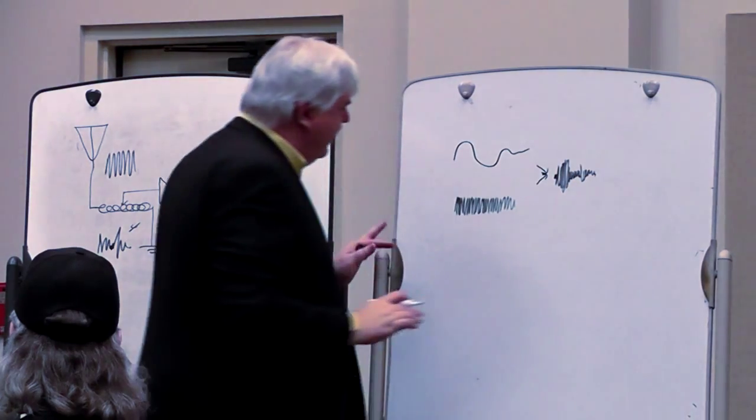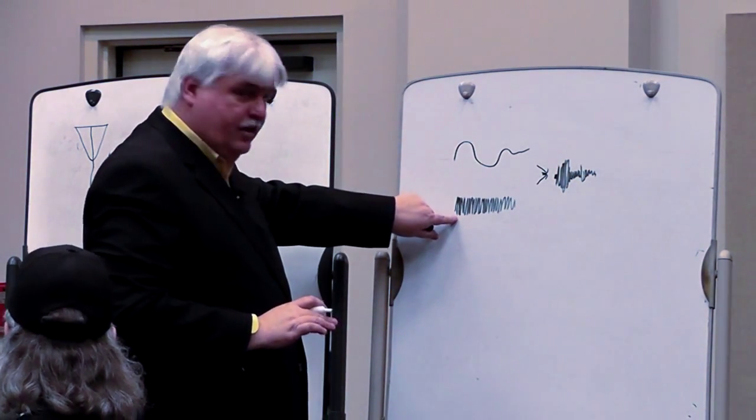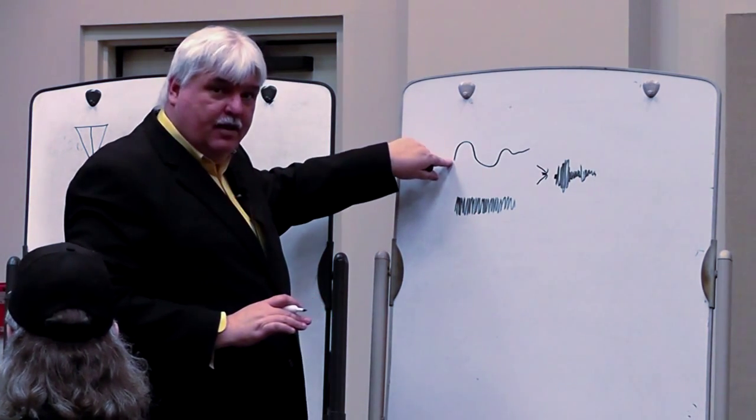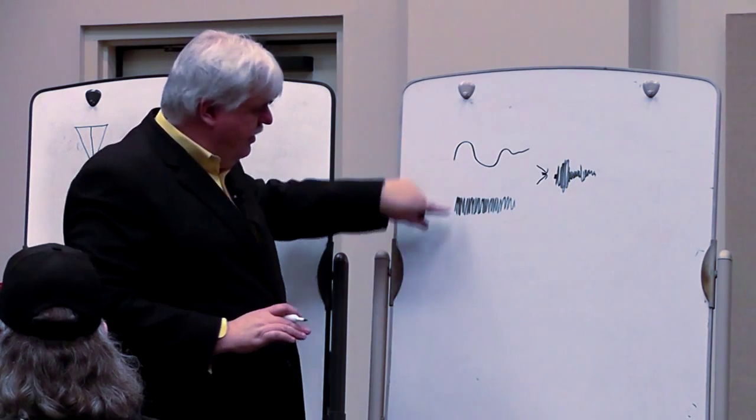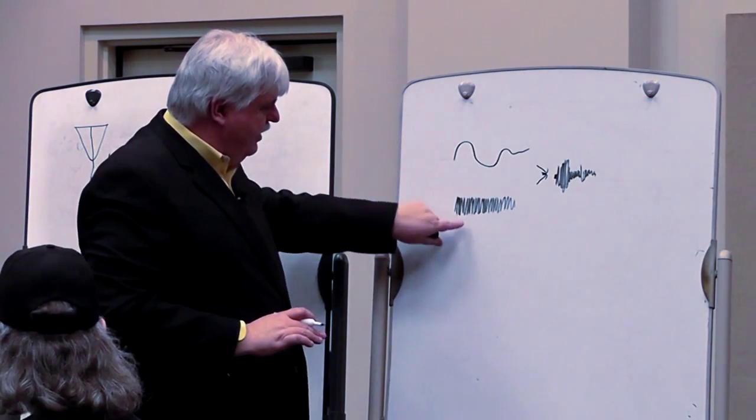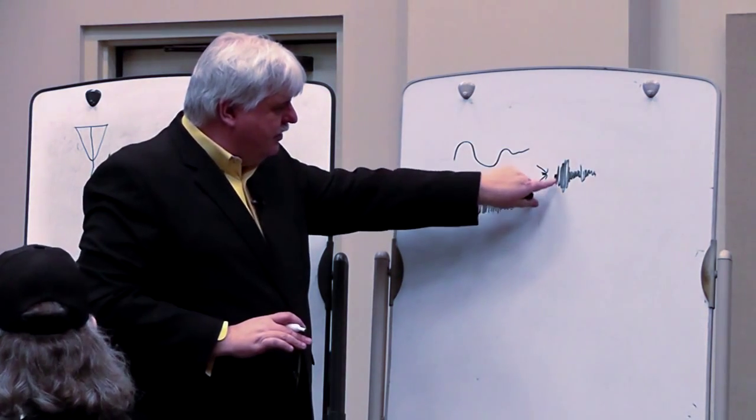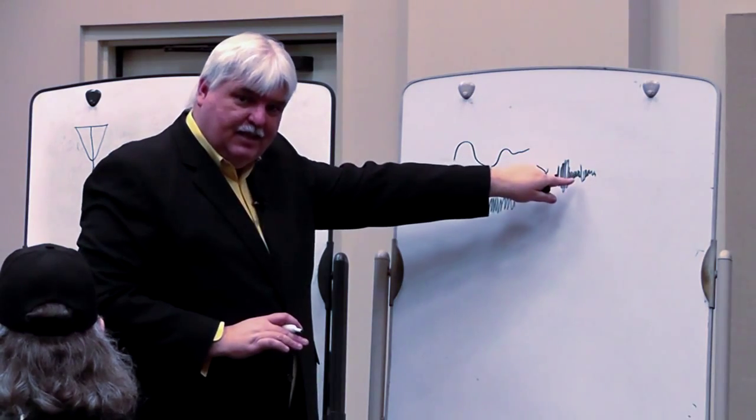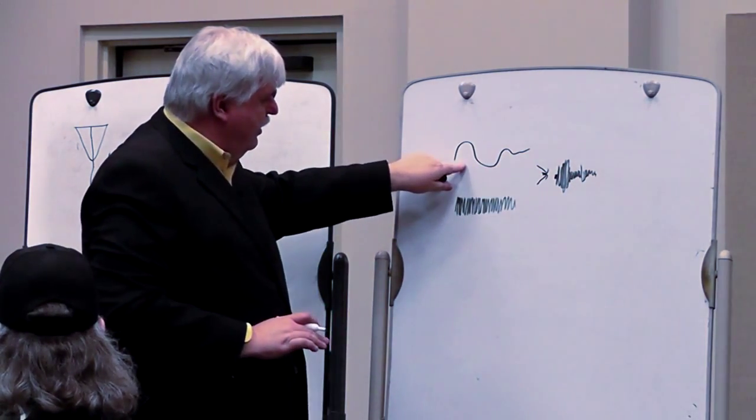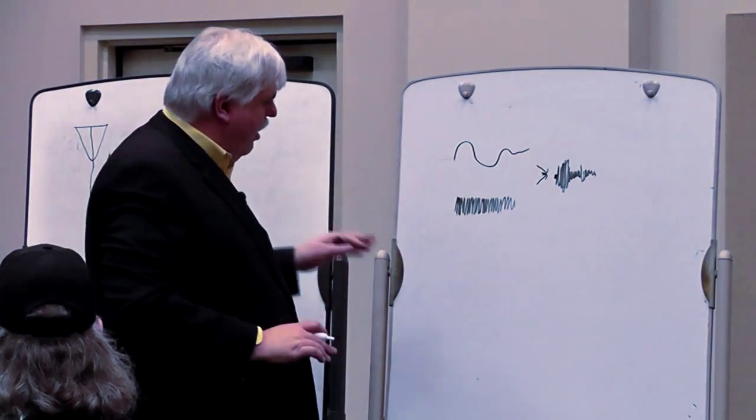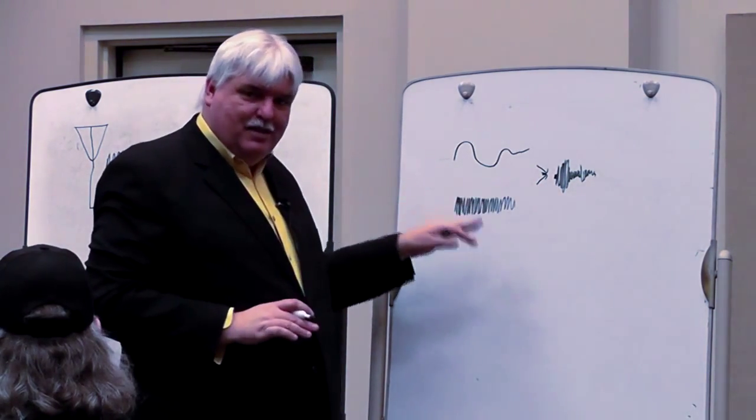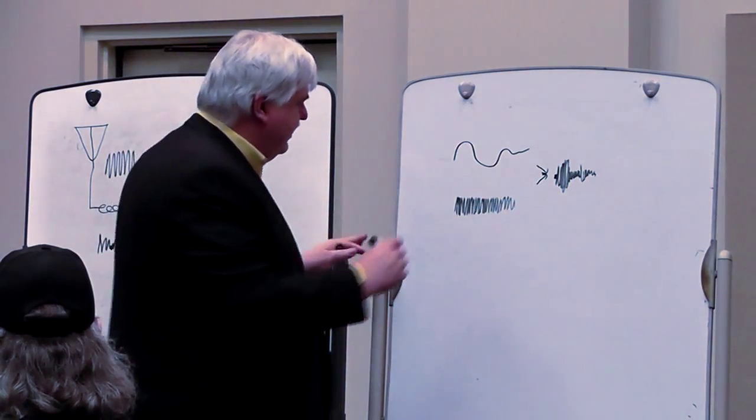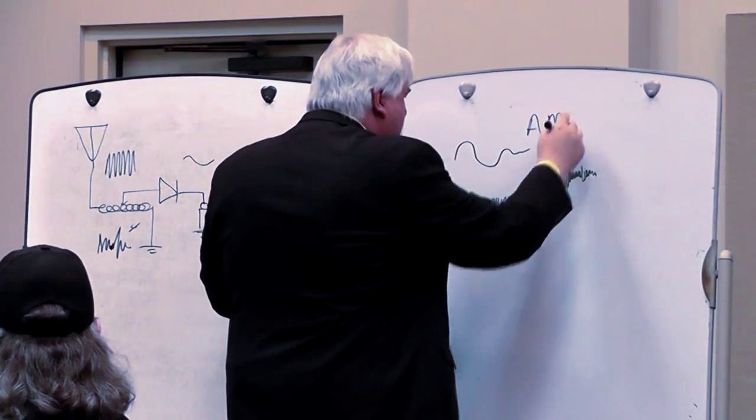So what I've done is I've changed the amplitude of this carrier wave depending on the audio signal that's modulating it. So that is why this is called amplitude modulation. Here's the carrier wave. Here's the same carrier wave here, but the height or the gain of that signal is changing depending on this audio signal that is modulating it. And all AM radio transmission depends on this principle. So that's amplitude modulation. This is AM.